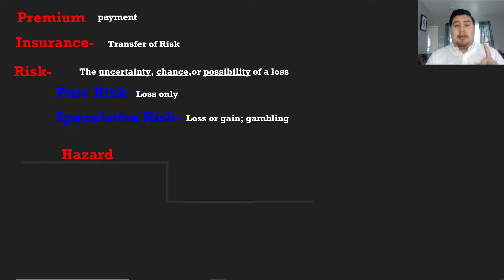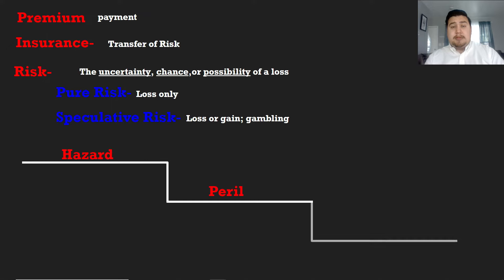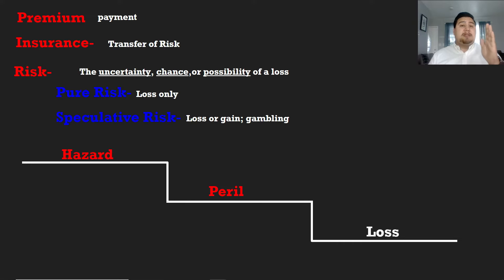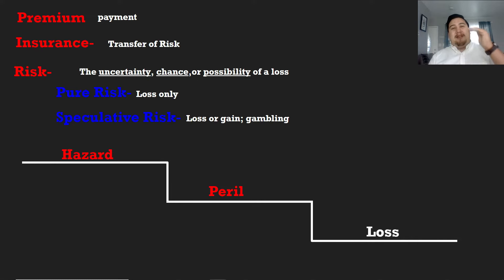Now we're going to get into a full concept. We have hazards, which lead down to perils, which lead down to loss — think of it like steps in a staircase, one causing the other. The definition of hazard usually says it is the cause of a peril, and the definition of peril says peril is the cause of a loss. So they all affect each other, one causing the next.